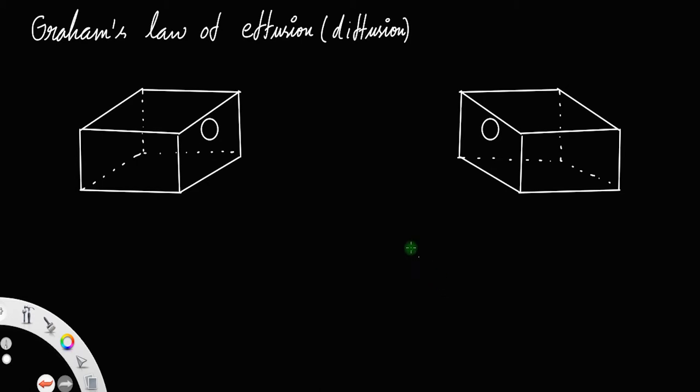Now, let us discuss Graham's law of effusion or diffusion. For that, let us consider two identical boxes having equal volume, let us say p. Both the boxes are provided with holes of the same size.